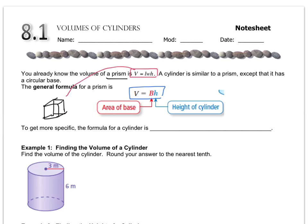For example, the reason the formula for a prism is length times width times height is because the base shape is a rectangle. The way you find the area of a rectangle is length times width — and so that's what the capital B represents: the area of the base.